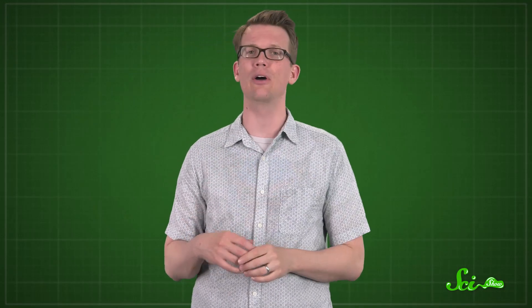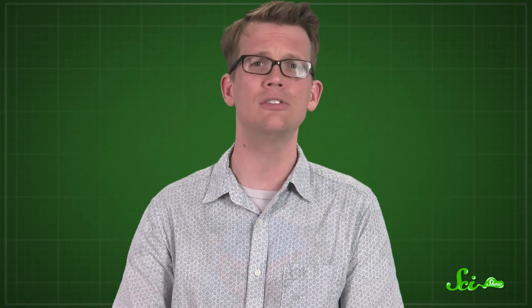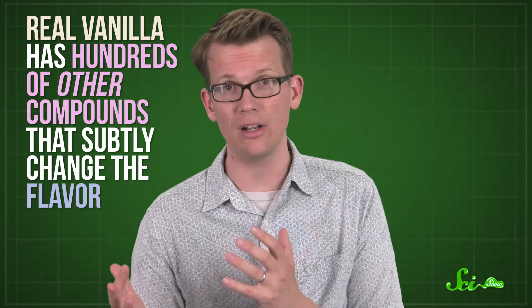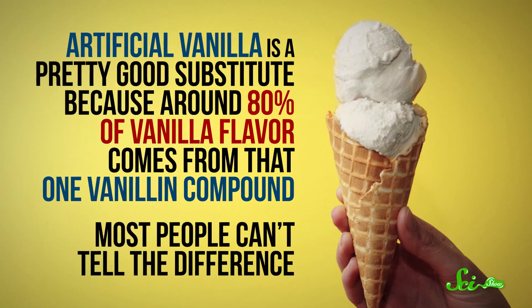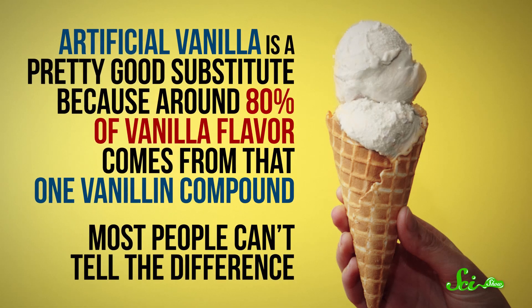There is one major downside to keeping things strictly in the lab, though. The taste. Because while synthetic vanillin is the same molecule you'll find in the stuff from vanilla beans, real vanilla has hundreds of other compounds that subtly change the flavor. Artificial vanilla is a pretty good substitute, because around 80% of vanilla flavor comes from that one vanillin compound. Most people can't tell the difference.